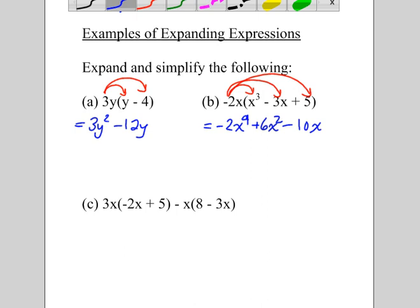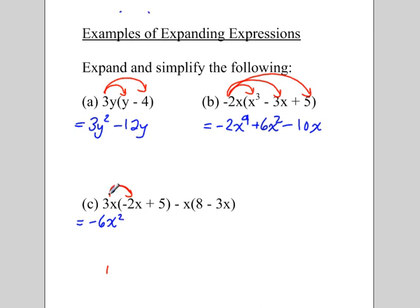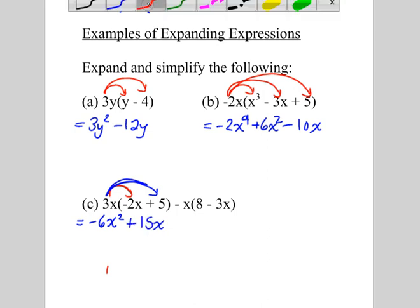And then let's look at the final example. So again, the first thing we're going to do is to distribute. So we're going to take what's in front and multiply by what's inside the bracket. So 3x times negative 2x is negative 6x squared. And 3x times 5 is positive 15x.